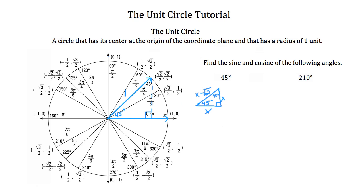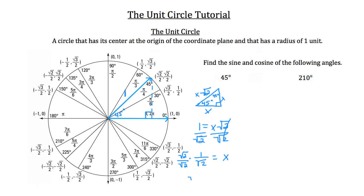We know that our value x root 2 is equivalent to 1. So I'm going to set 1 equal to x root 2 and solve for x. To do that, I need to divide both sides by root 2. On the left-hand side, we have 1 over root 2; on the right-hand side, the root 2's cancel and we just have x. But remember, we can't have a square root in the denominator, so I need to multiply by root 2 over root 2. On top, you get root 2 times 1, which is root 2.